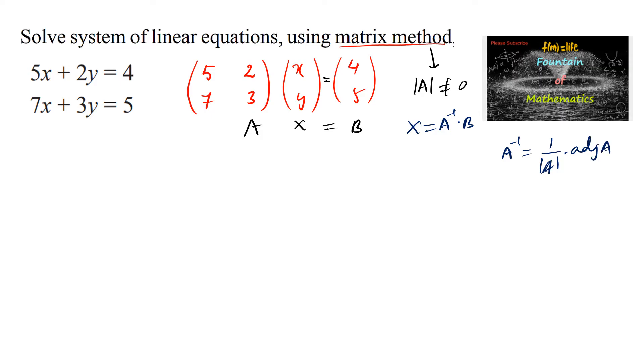Let's find the determinant of A. Determinant of [5, 2; 7, 3] equals 5 times 3 (15) minus 7 times 2 (14), so 15 minus 14 equals 1, which is not equal to 0. We can say A inverse exists and the given system has a unique solution since the determinant is not equal to 0.